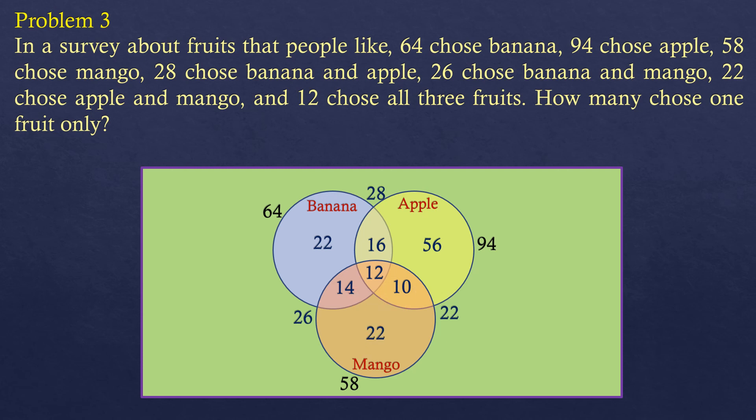The question is: how many chose one fruit only? We add those who like banana only, apple only, and mango only: 22 plus 56 plus 22 equals 100. So the answer is 100.